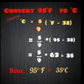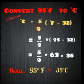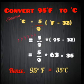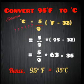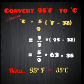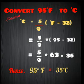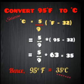Let us take an example. Convert 95 degrees Fahrenheit to Celsius. Putting the formula — degree Celsius is equal to 5/9 into (degree Fahrenheit minus 32) — and substituting the values, solving the equation we get 35 degrees Celsius. So 95 degrees Fahrenheit is equal to 35 degrees Celsius.